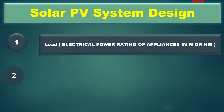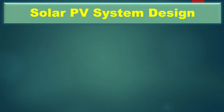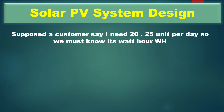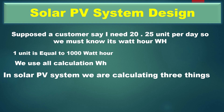Number two, energy — the system we are going to design, we must know how much energy it will produce. Suppose a customer says I need 20 to 25 units per day; we must know its wattage. One unit is equal to 1000 watt-hours. In calculation and formulas, we use watt-hours instead of kilowatt-hours.